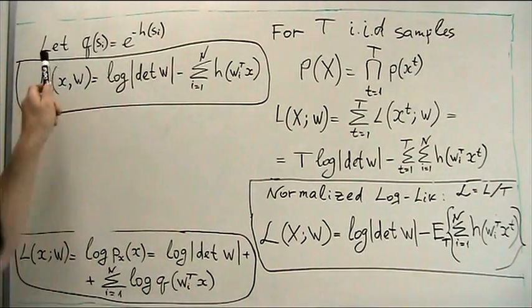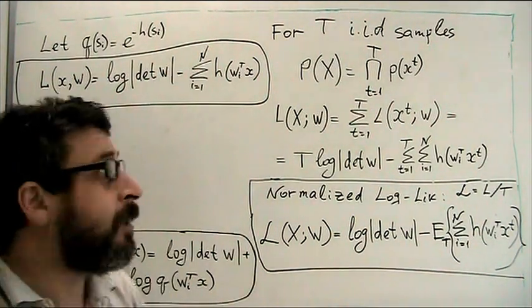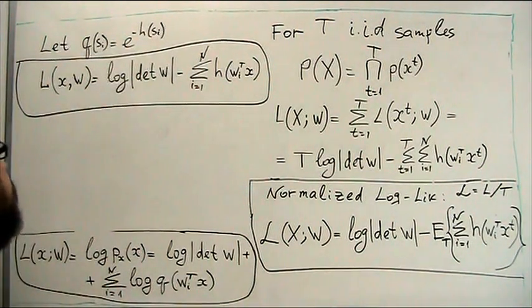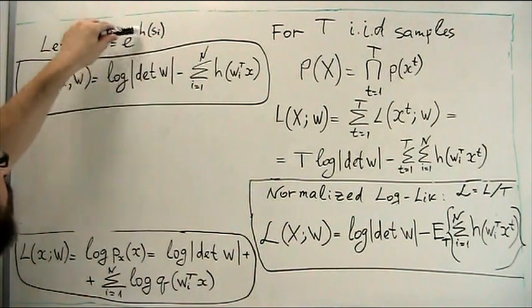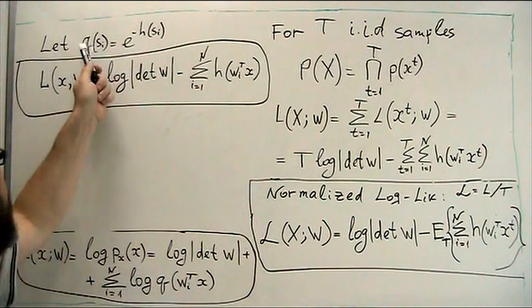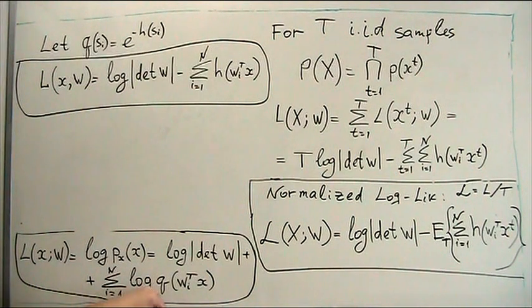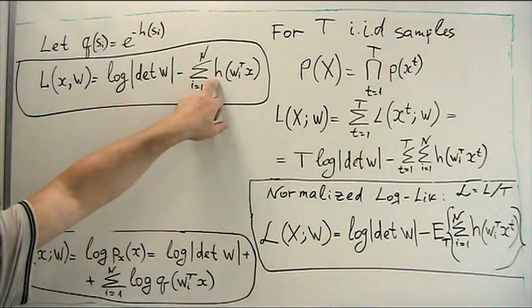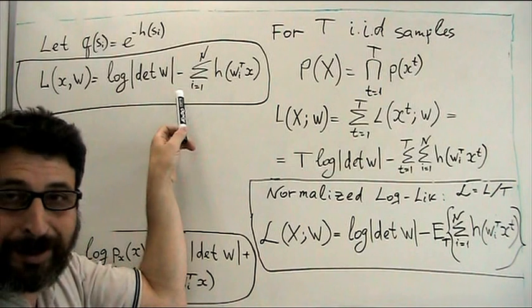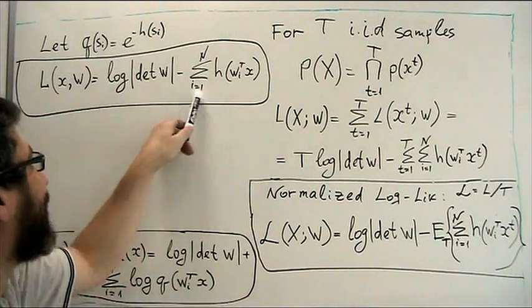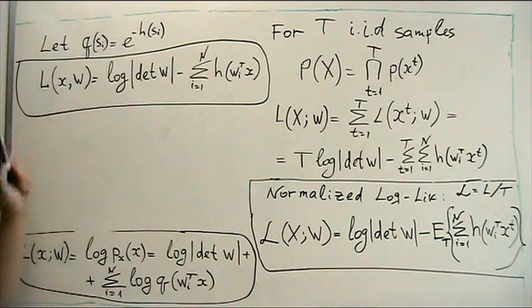Now, it's convenient to express probability density functions in exponential form, like this. So, this is x e to the power of minus h of S_i. This will be our q of S_i. Then log-q, of course, will just give us this term. And this will a bit simplify expression for our likelihood function of mixtures x.